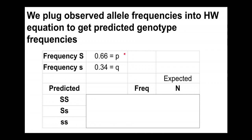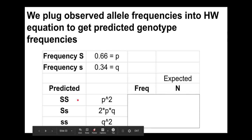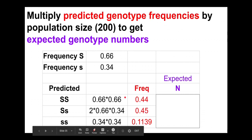We use p to represent the frequency of big S and q to represent the frequency of little s — always make sure you know how p and q are defined in any given scenario. Under Hardy-Weinberg equilibrium, the frequency of the homozygous dominant is p², the heterozygous frequency is 2pq, and the homozygous recessive frequency is q². We can plug our values of p and q into those to get the predicted frequencies.